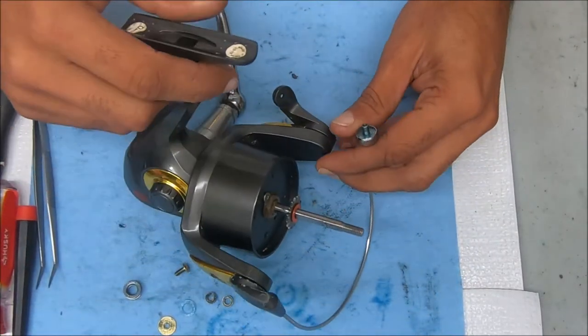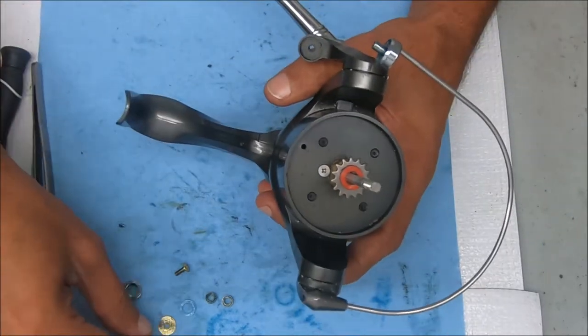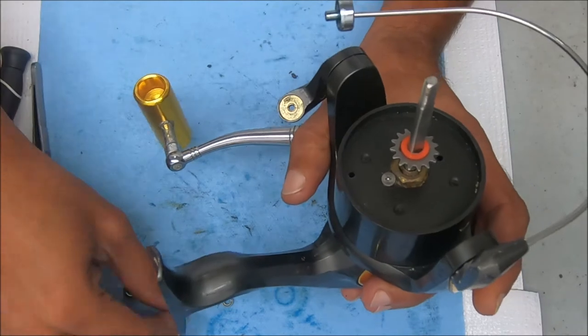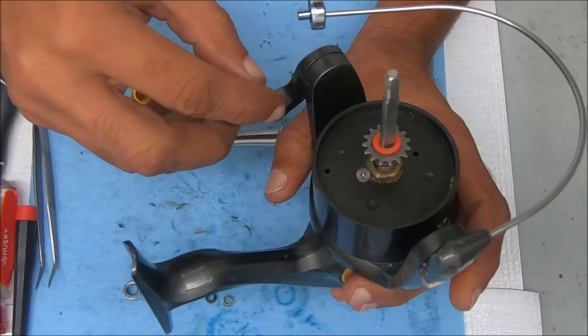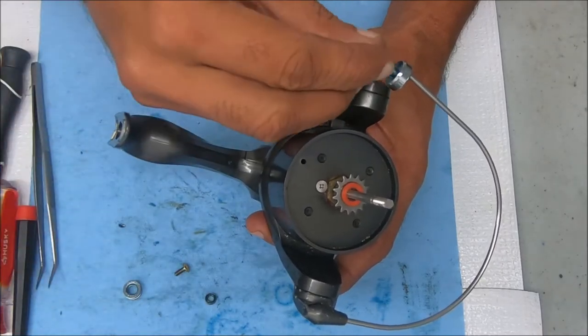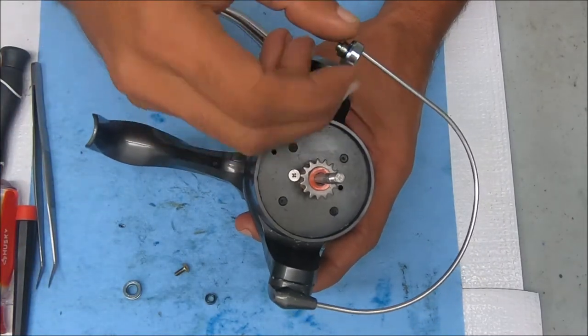It's real quick. I'm gonna put this metal part inside the bail arm, then that washer goes on top, that clear washer. I already oiled and kind of greased around these to help protect them against the saltwater.